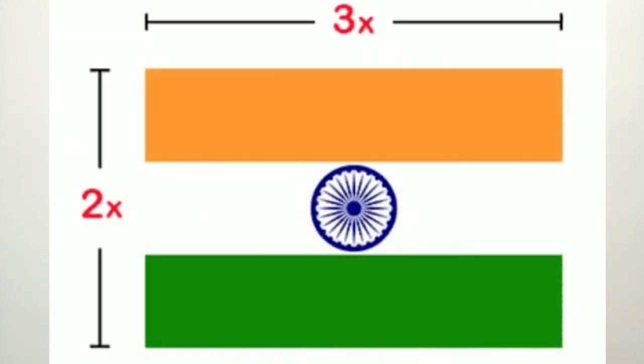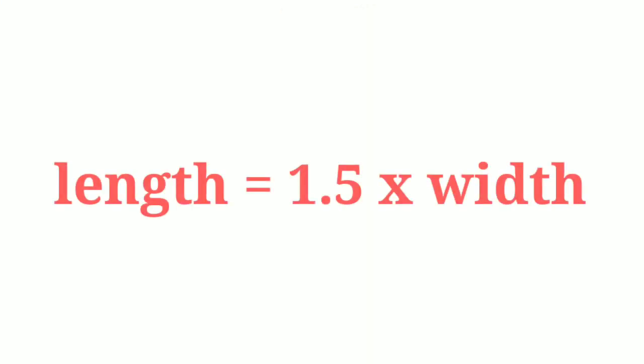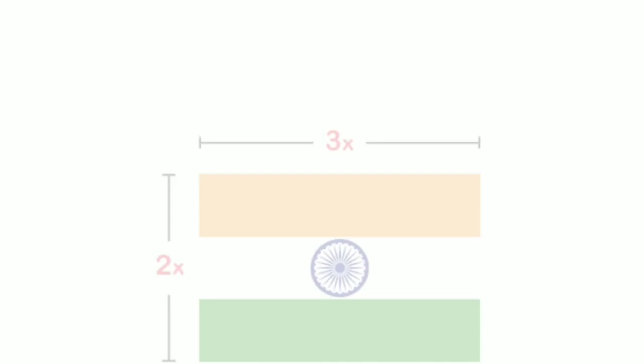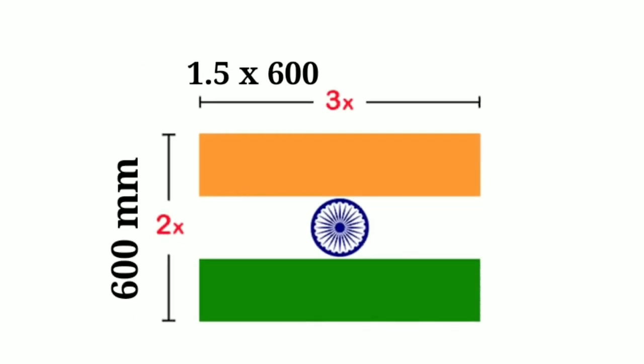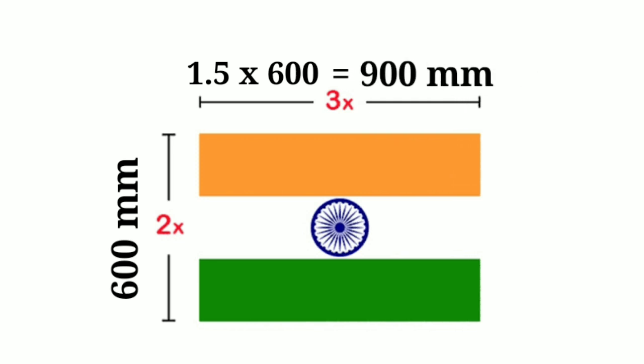Now let's talk about the mathematical part — the dimensions of the flag. The flag has a ratio of 2 by 3, meaning the length of the flag is 1.5 times that of the width. If the width is 600 millimeters, then the length must be 600 times 1.5, which is 900 millimeters. These are the standard sizes of the national flag.